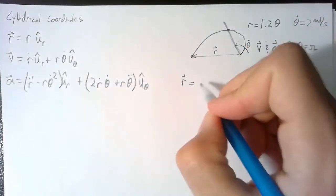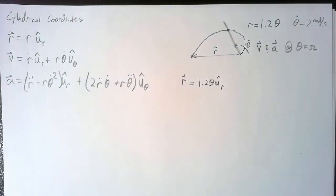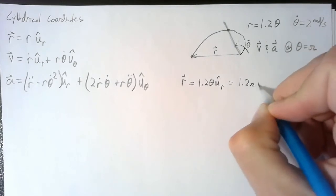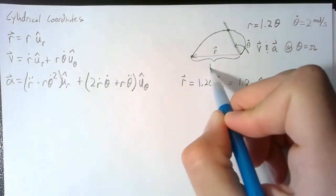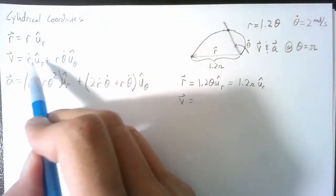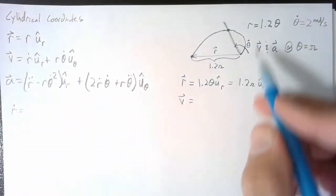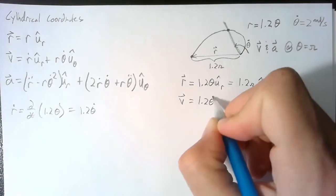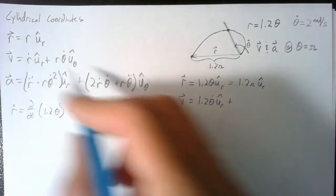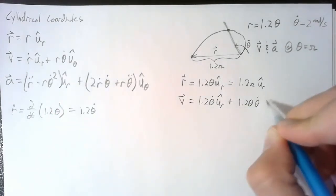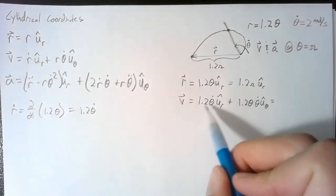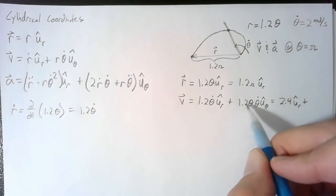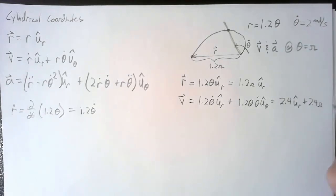Starting with position: r = 1.2θ, and plugging in θ = π gives 1.2π in the uᵣ direction. For velocity, ṙ = 1.2θ̇, so the first term is 1.2θ̇ in the uᵣ direction, plus r·θ̇ = 1.2θ·θ̇ in the u_θ direction. Plugging in θ̇ = 2: velocity is 2.4 in the uᵣ direction plus 2.4π in the u_θ direction.